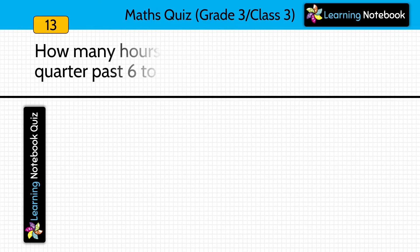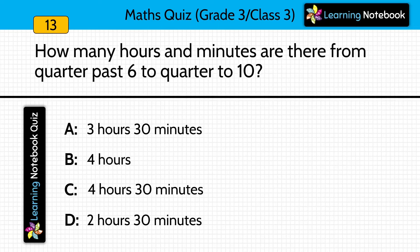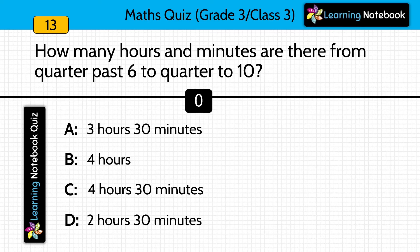Next question: How many hours and minutes are there from quarter past 6 to quarter to 10? Calculate the time — quarter past 6 to quarter to 10. Answer is option A, 3 hours 30 minutes.